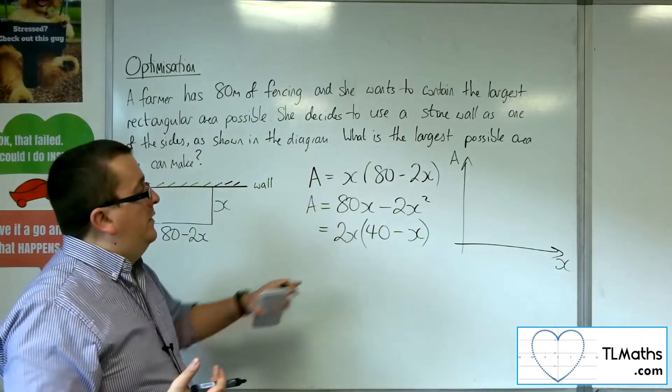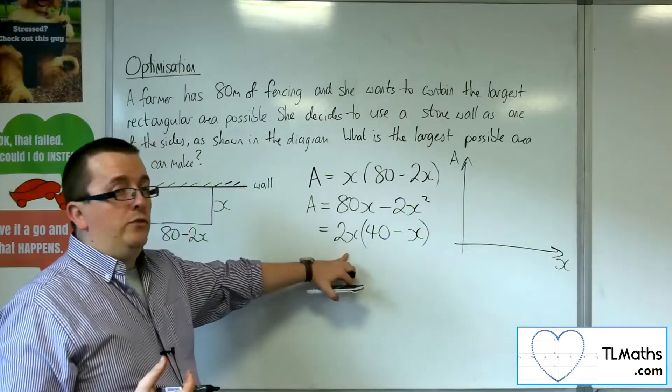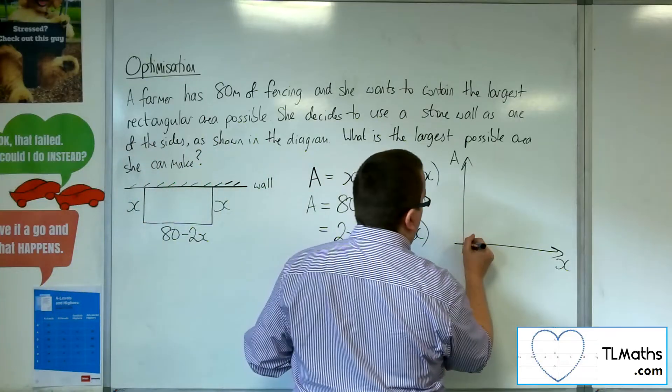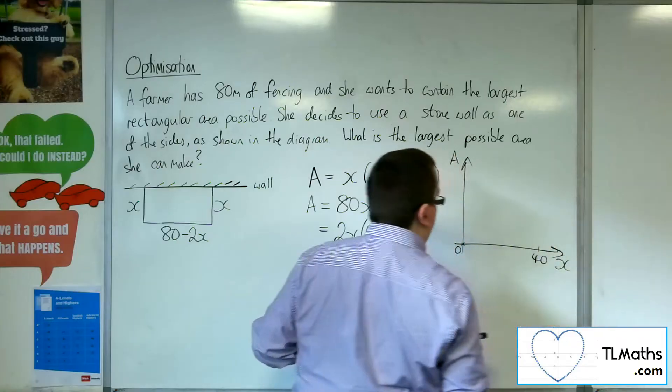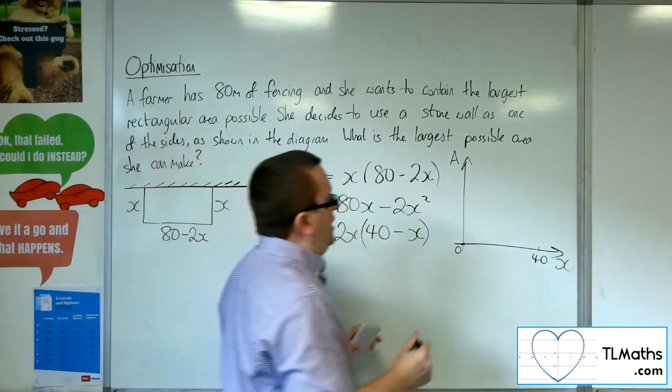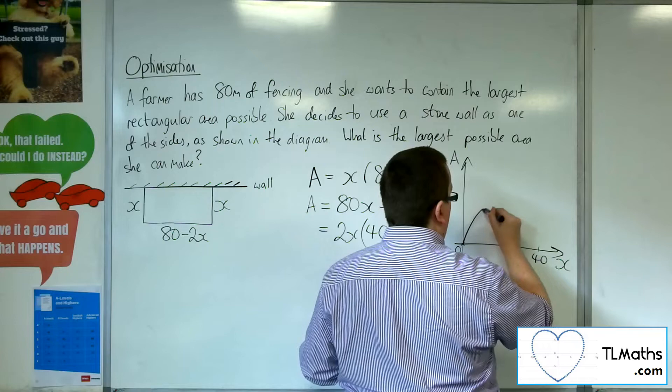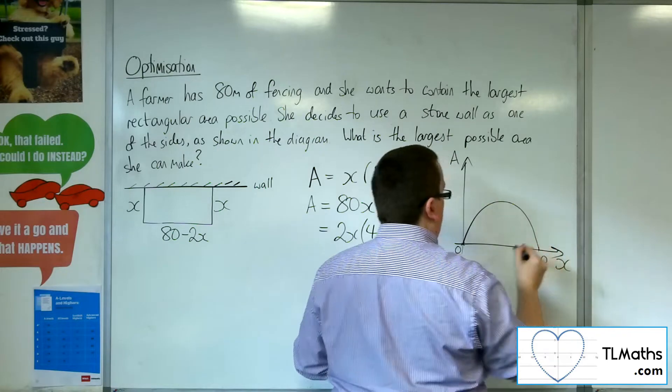So that means that this function would be going through 0 and 40. So 0 and 40. And this is going to be a parabola that looks something like that.